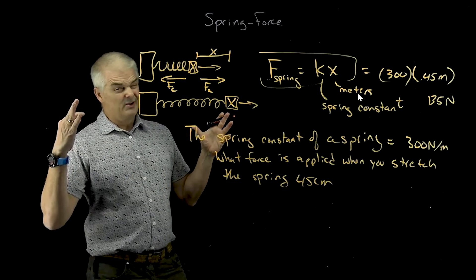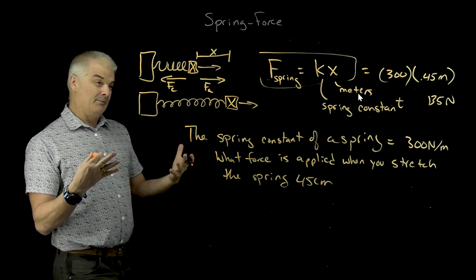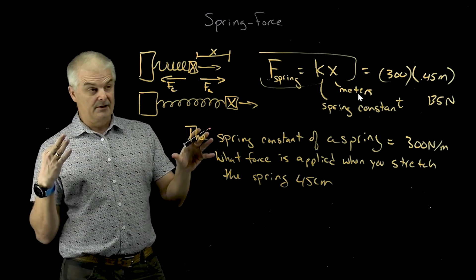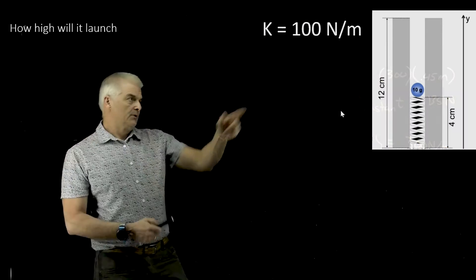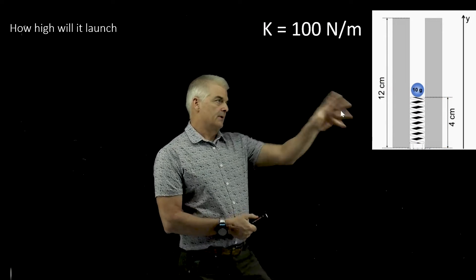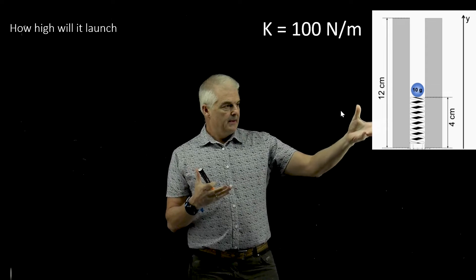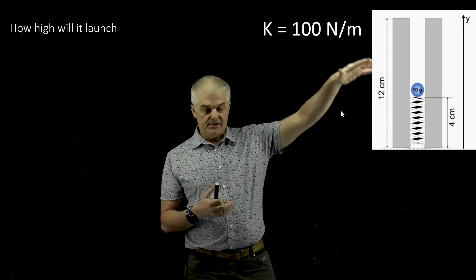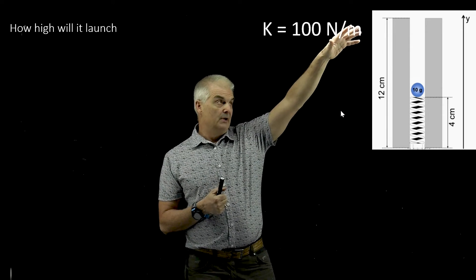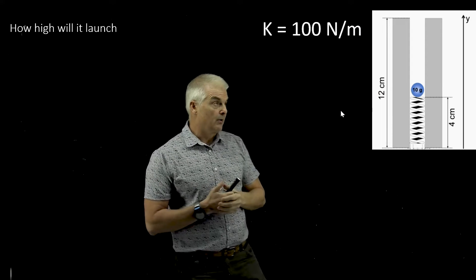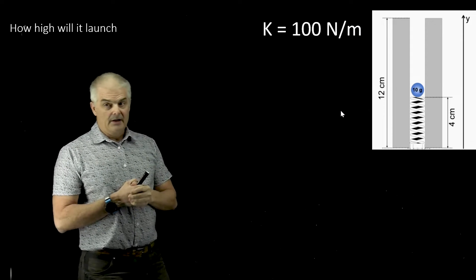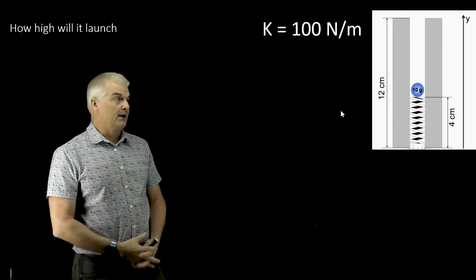where we're going to go in the next problem. So let's say we've got this object right here. We've got a spring that is compressed from normal of 12 centimeters down to 4 centimeters, and there's a 10-gram ball on there, and the question is, how high will the ball go?